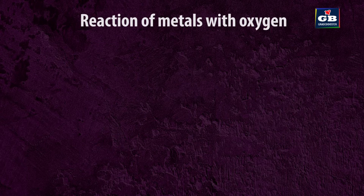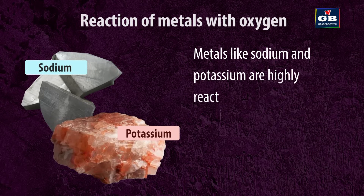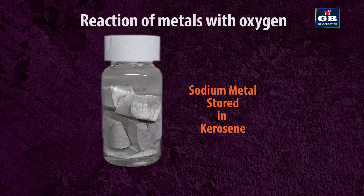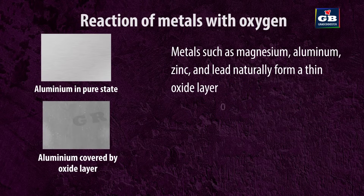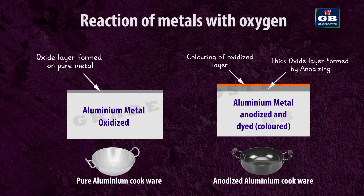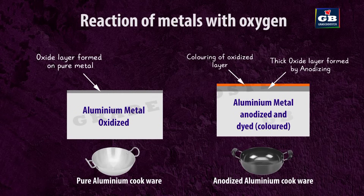Reaction of metals with oxygen: Metals like sodium and potassium are highly reactive with oxygen and may catch fire just by being exposed to it. That is why they are stored by immersing them in kerosene. Metals such as magnesium, aluminium, zinc and lead naturally form a thin oxide layer on their surfaces when exposed to air. This oxide layer acts as a protective barrier that prevents the underlying metal from further oxidation and corrosion. This protective layer can be made even thicker to improve its resistance to corrosion.